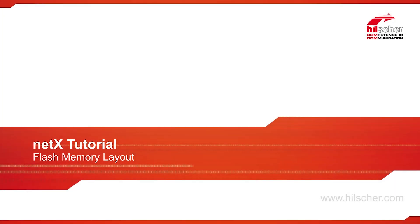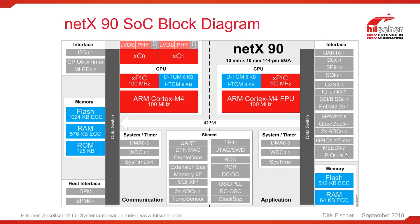Hello, my name is Dirk Fischer from Hilscher and I want to explain flash memory layouts of different NetX 90 use cases in this tutorial. Let's have a look at the block diagram first to check where flash memory is located. We have a dedicated communication side with one megabyte of flash for communication purposes and another 512 kilobytes of flash for the application side, which can be used for the user application.